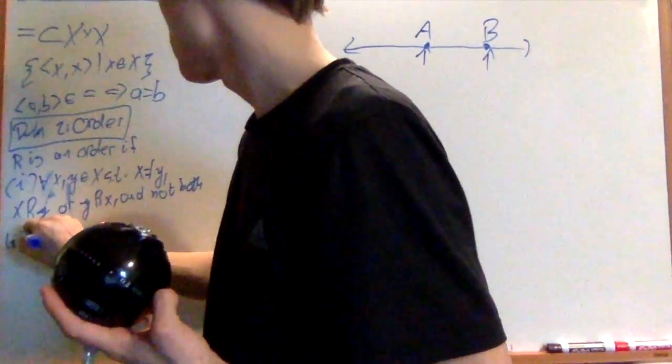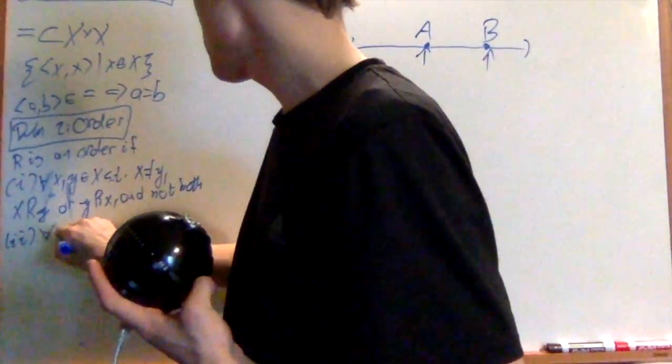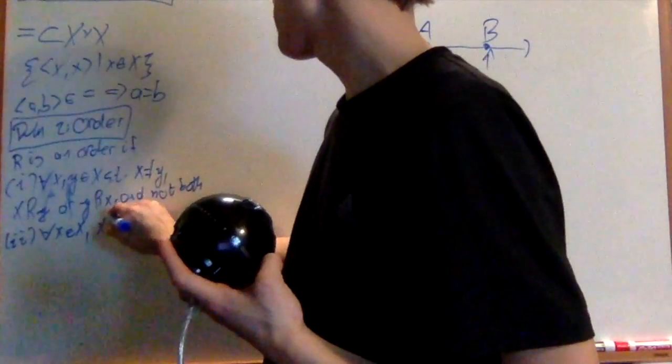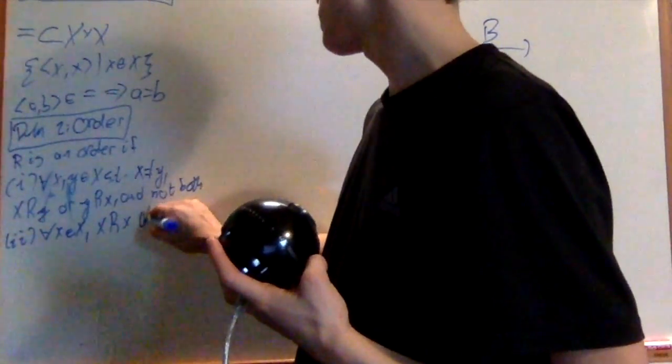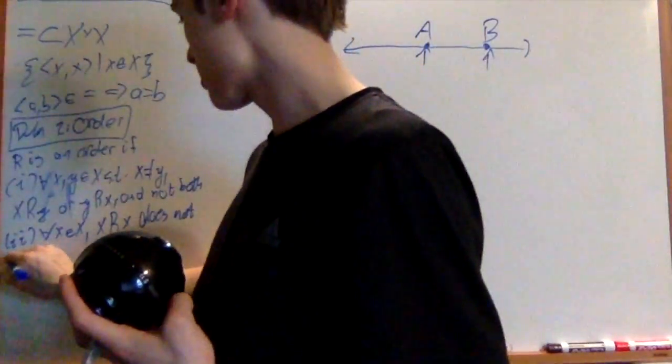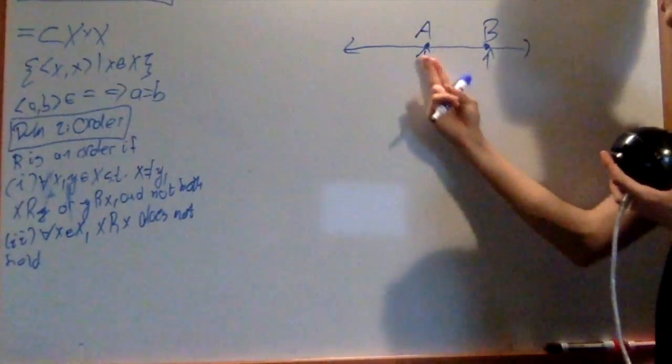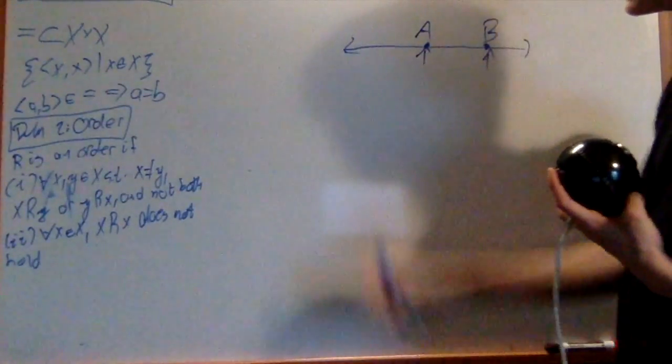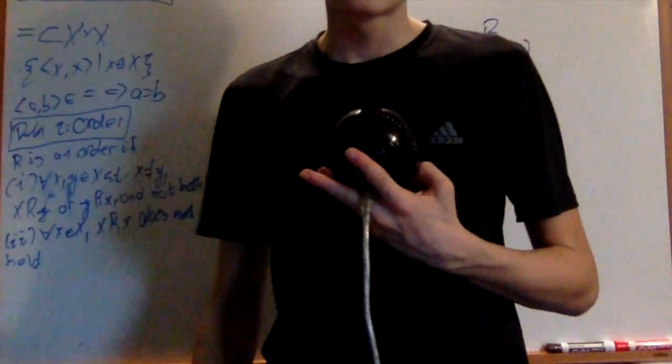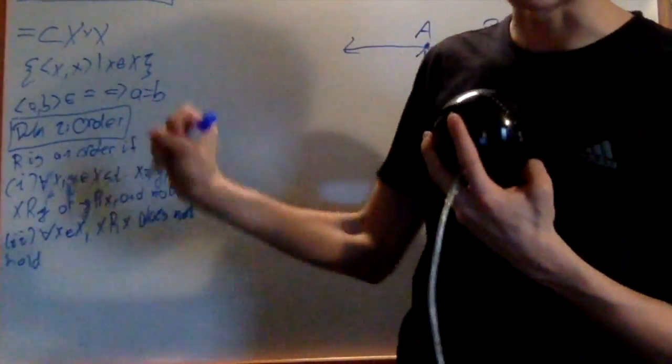Number two is that for any x, xRx does not hold. Basically meaning x cannot be less than x because it's equal to itself. It's not less than. This is a strict order. There's no less than or equal to, it's just less than.